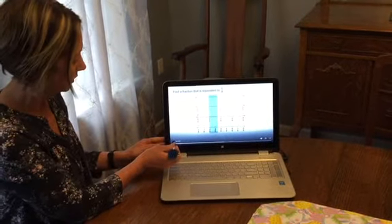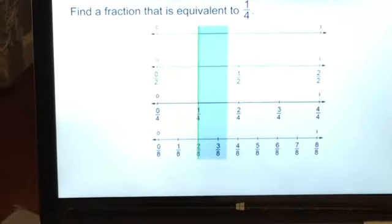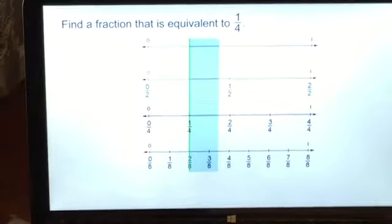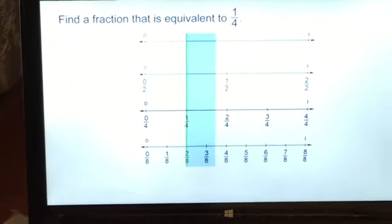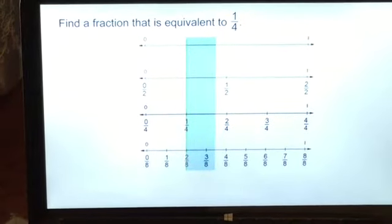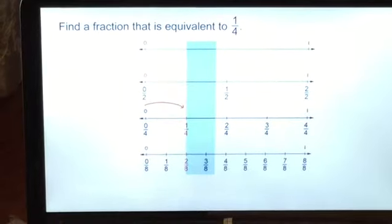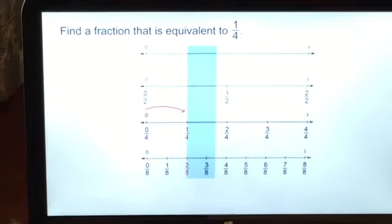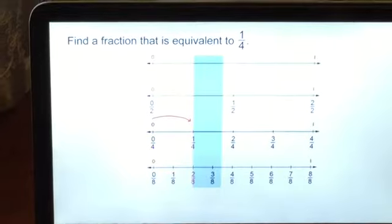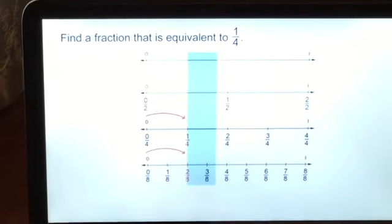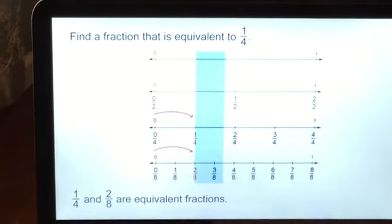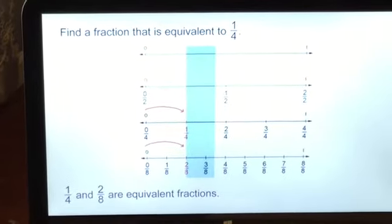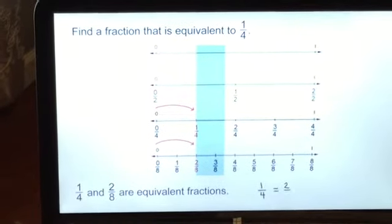Let's continue with the video. Does the edge line up with the point for another fraction? The side of the straight edge lines up with one fourth and two eighths. So the distance from zero to one fourth on the number line is the same as the distance from zero to two eighths. One fourth and two eighths are equivalent fractions. You can write one fourth equals two eighths.